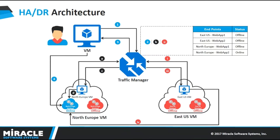If East US web app one is down, then East US web app two will respond to the East US VM. If all applications inside East US are down, then applications hosted in other regions will respond — like North Europe web app one or web app two. Similarly, when you hit the URL from North Europe VM, the applications deployed in the North Europe region will be responding. The red indicators show that East US web app one, East US web app two, and North Europe web app one are all down.